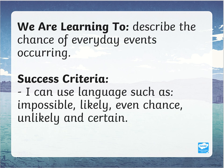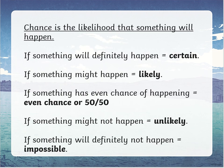Chance is the likelihood of something happening. So if something is definitely going to happen, we say it is certain. If something might happen, we call that likely. If something has an even chance of happening — so it could be 50/50 — we call it even chance. If something might not happen, it's unlikely.